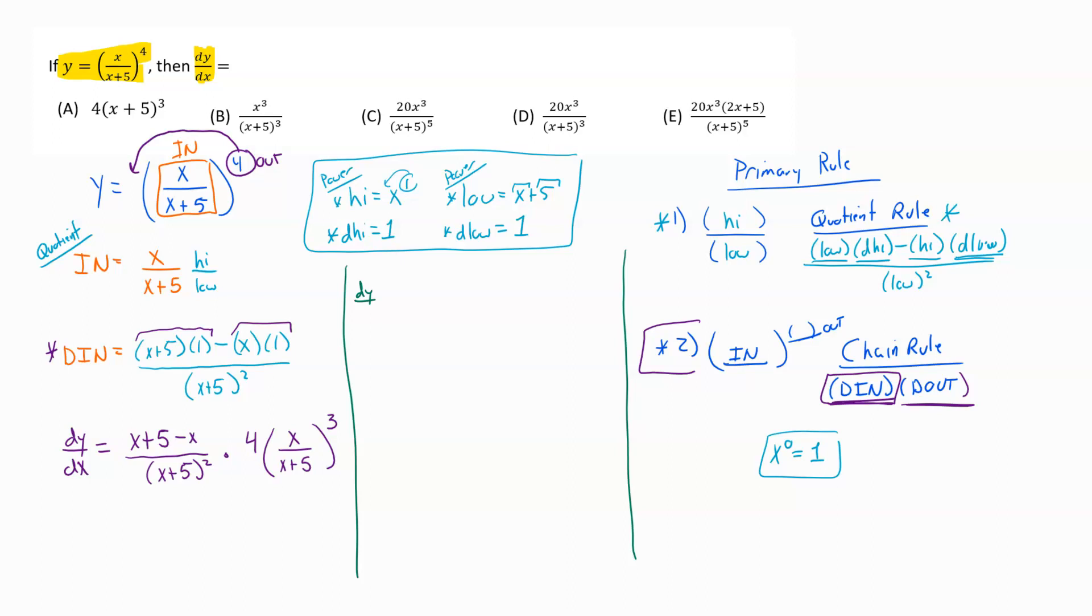As I build this up and simplify it, on the top here you can see I've got an x minus an x. Those are going to cancel each other out. So I've got a 5 on top that I can now multiply by this 4. Remember 4 is 4 over 1. So I'm looking at 20.